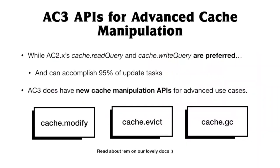With Apollo Client 3, we also released a new set of advanced cache manipulation APIs — cache.modify and cache.evict. You can check those out on our docs.